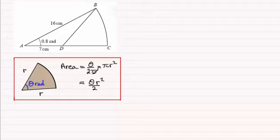You can cancel out the π's and that gives you this formula here. So let's start then with the area of the sector.